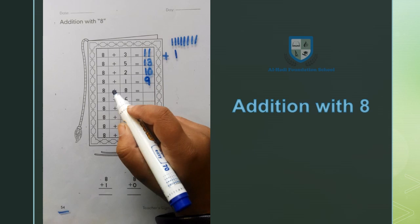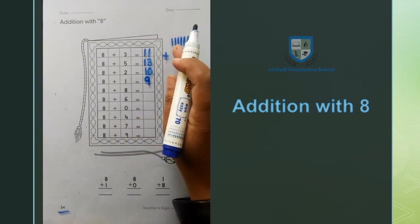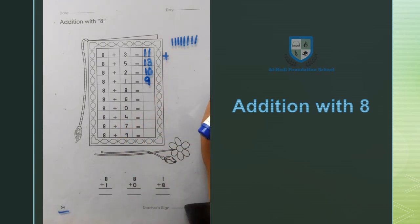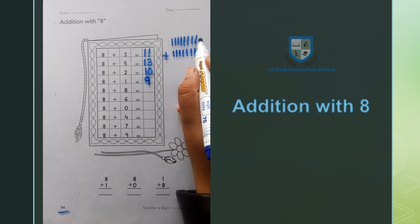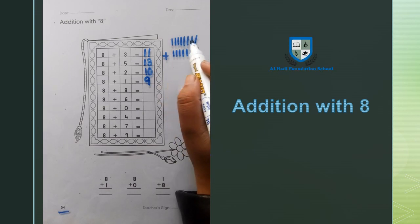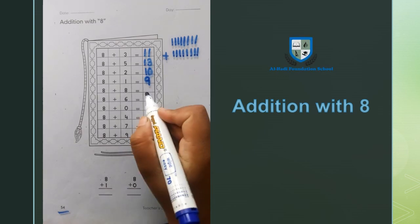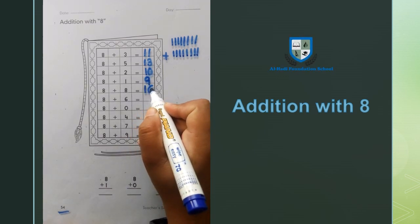Next, 8 plus 8. Now we will add 8 lines and 8 lines. 1, 2, 3, 4, 5, 6, 7, 8. 1, 2, 3, 4, 5, 6, 7, 8. 8 plus 8 equals 16.